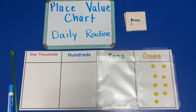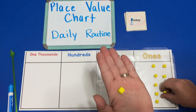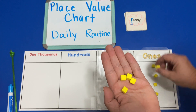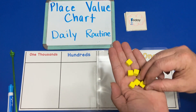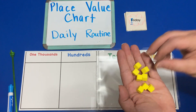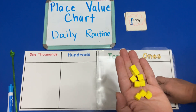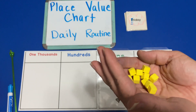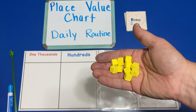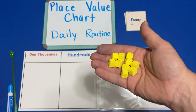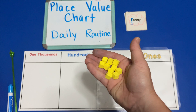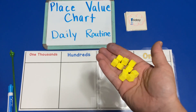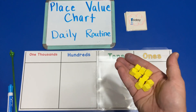Well first let's count how many units we have: one, two, three, four, five, six, seven, eight, nine, ten. We have ten units right now. But they can't go in the ones place because only nine can fit in the ones place.